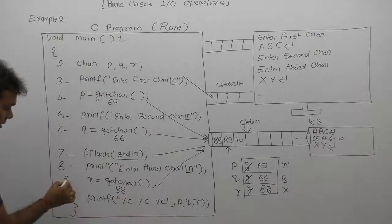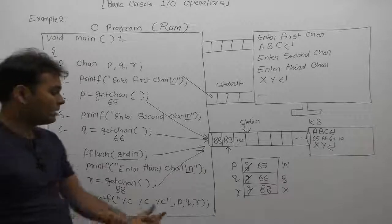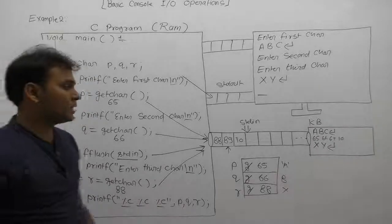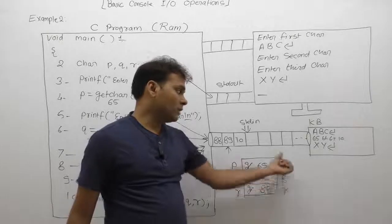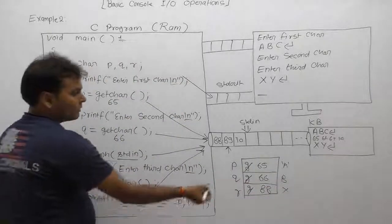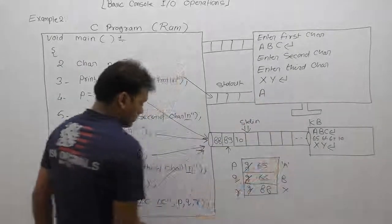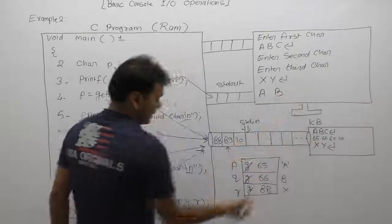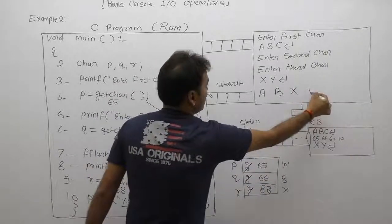So the final state of variables is: p holds 'a' (ASCII 65), q holds 'b' (ASCII 66), and r holds 'x' (ASCII 88). The final printf statement displays the character values of p, q, and r using %c format specifiers. Therefore the output is: p prints 'a', q prints 'b', and r prints 'x'. This is the final result of this program.